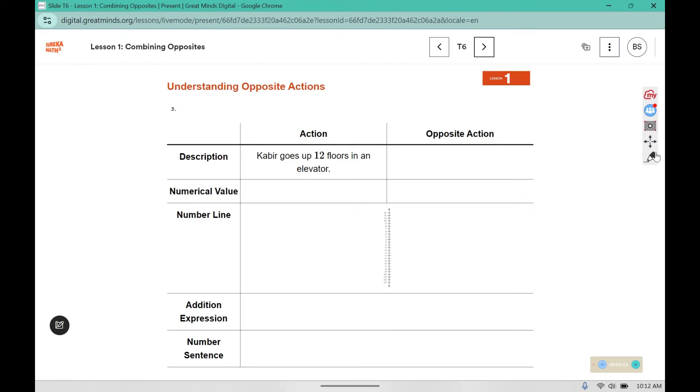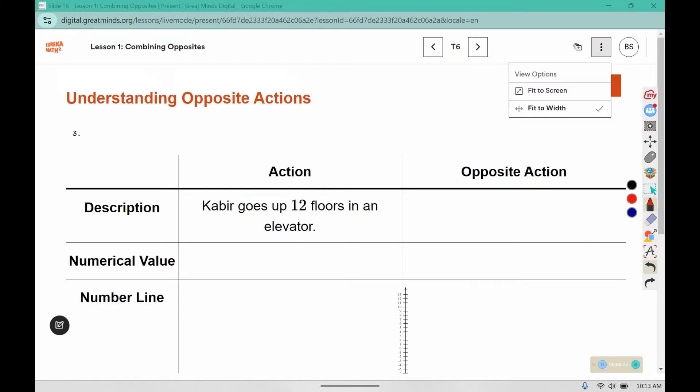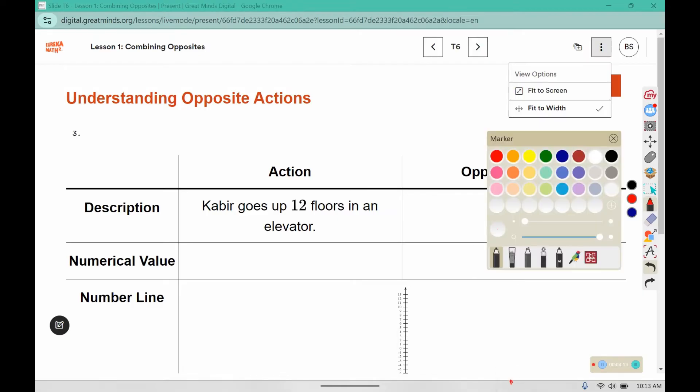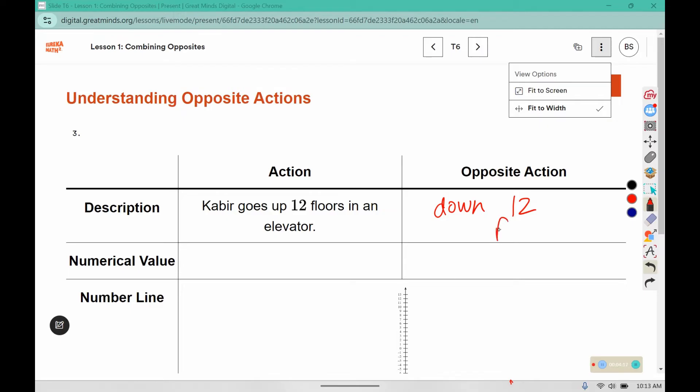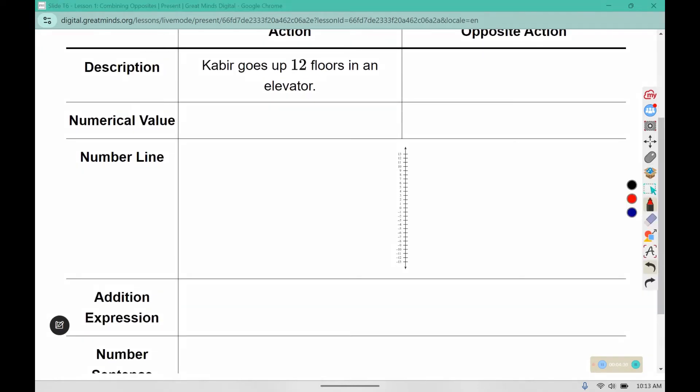Here I have a vertical number line. It says Kabir goes 12 floors in an elevator. So he would go down 12 floors. Here up would be positive and down would be negative. In our vertical number line, we would start at 0 and go up 12. And then we would head back down 12, leaving us at 0. So we have 12 plus negative 12, which comes out to 0.